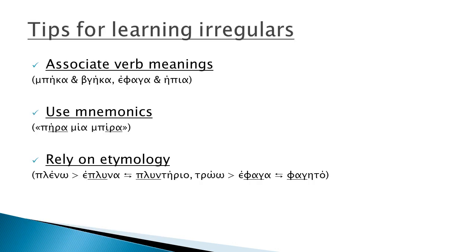I will give you now three main tips for better learning the irregular verbs. First, associate verb meanings: try to learn together verbs that have relevant meanings. Second, use mnemonics. For example, Βίρα μία Βίρα is an easy way to remember the past tense of a verb, as the two words are phonetically close. Make little stories in your mind that will help you remember.